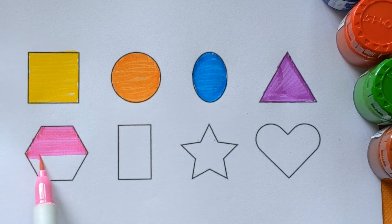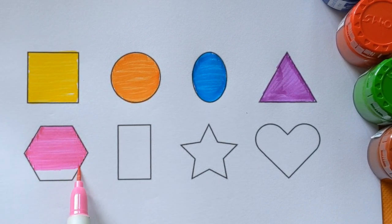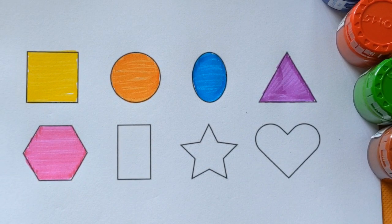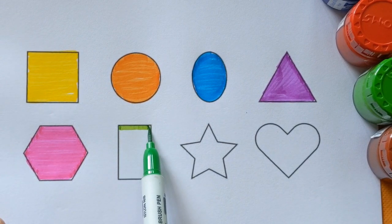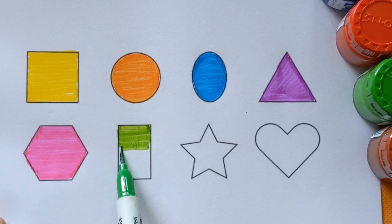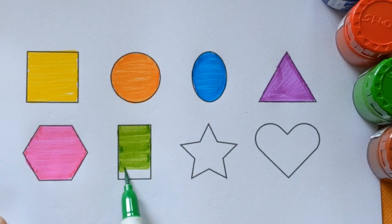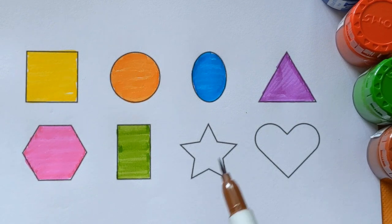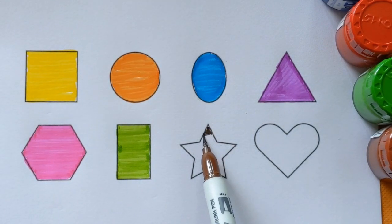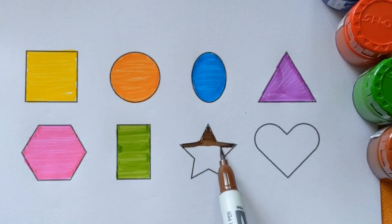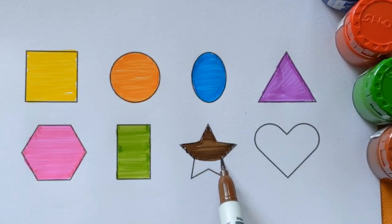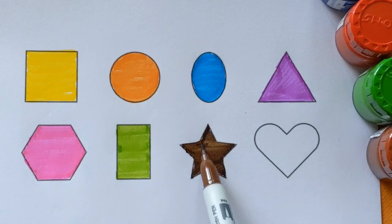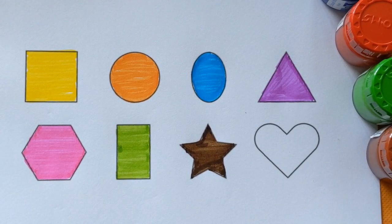Black color. Hexagon with a pink color. Rectangle shape with a light green color. Next is star. Star shape with a brown color.